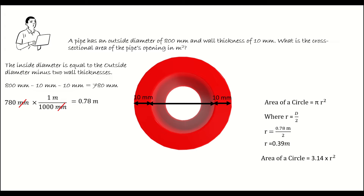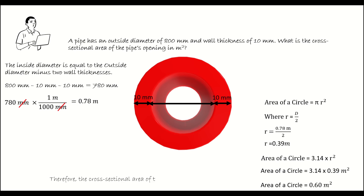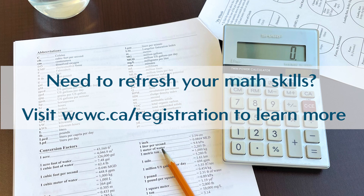Entering that into our equation: pi, which is 3.14, times the radius squared. 3.14 times 0.39 meters squared. 3.14 times 0.39 times 0.39 is 0.60 meters squared. Therefore, the cross-sectional area of the pipe's opening is 0.6 meters squared.